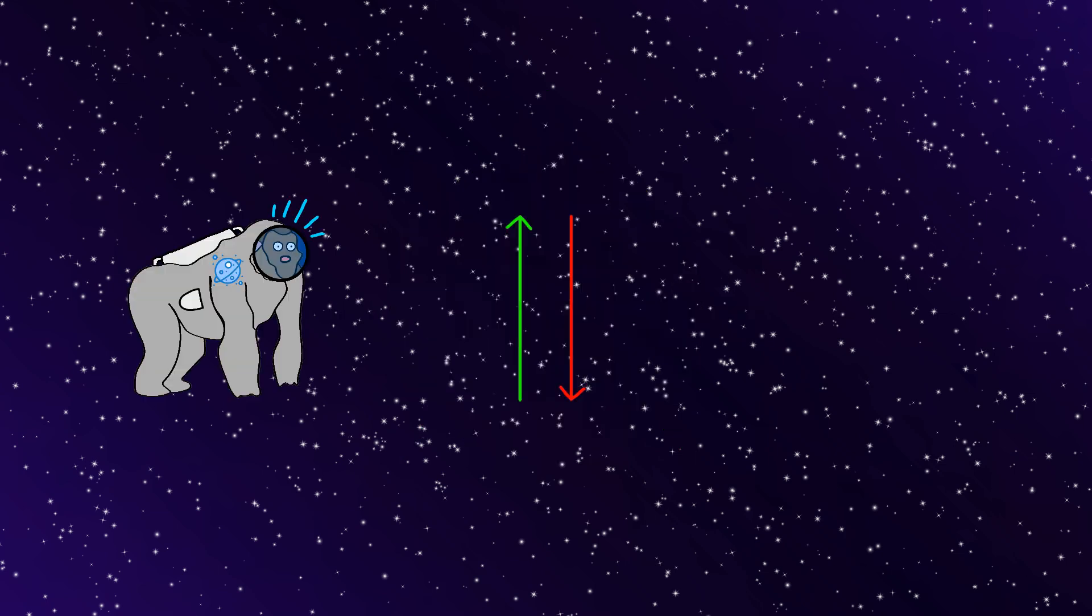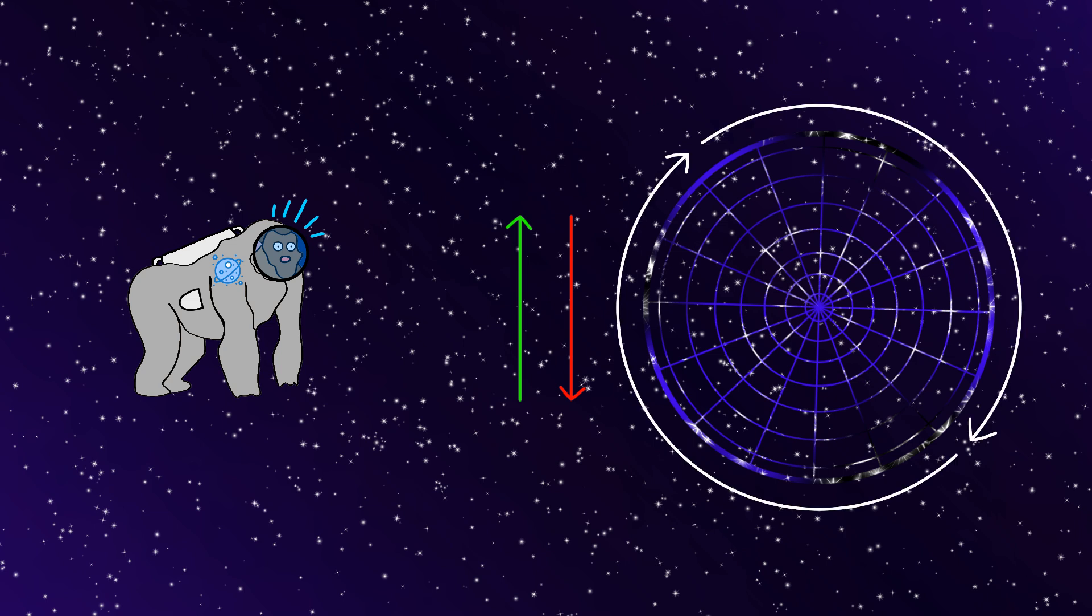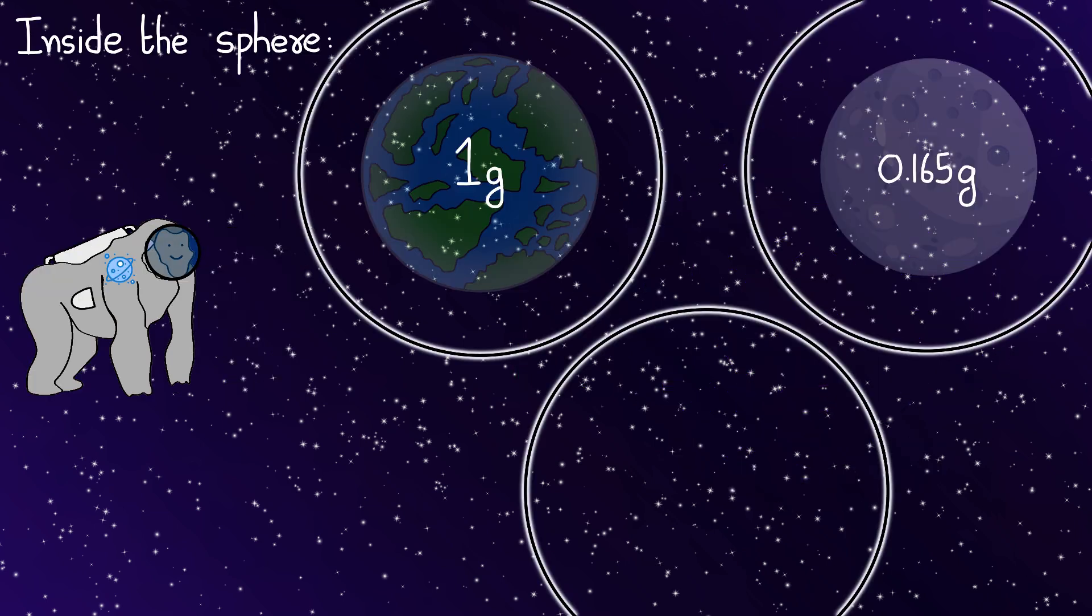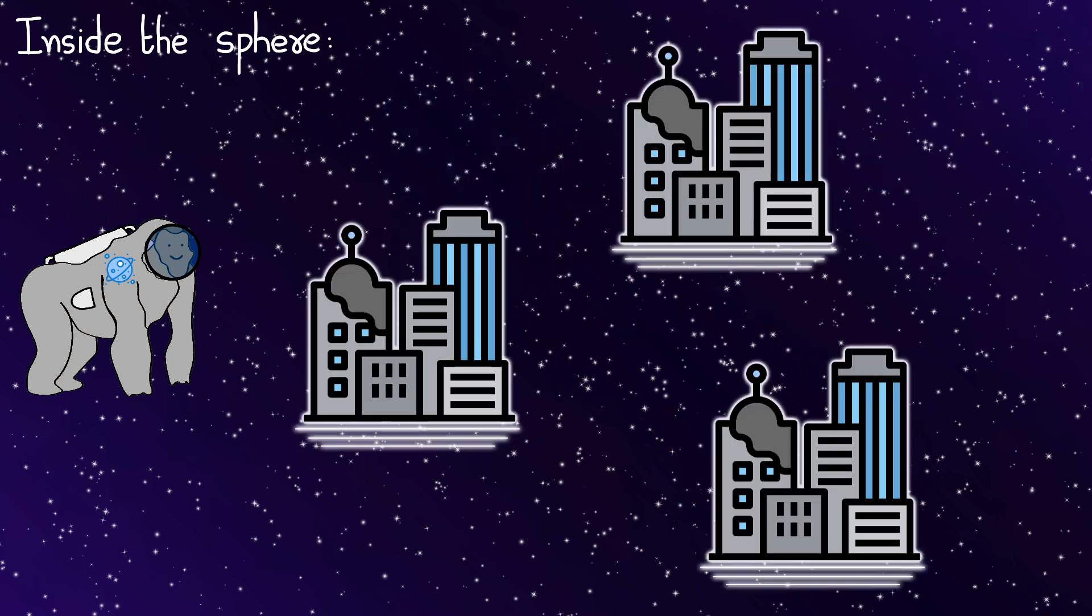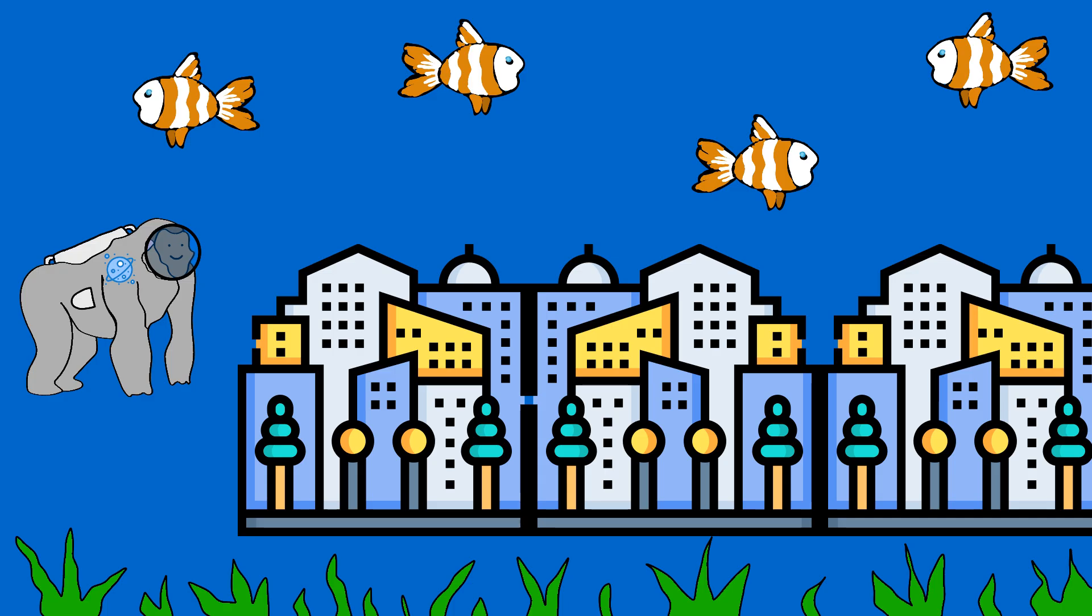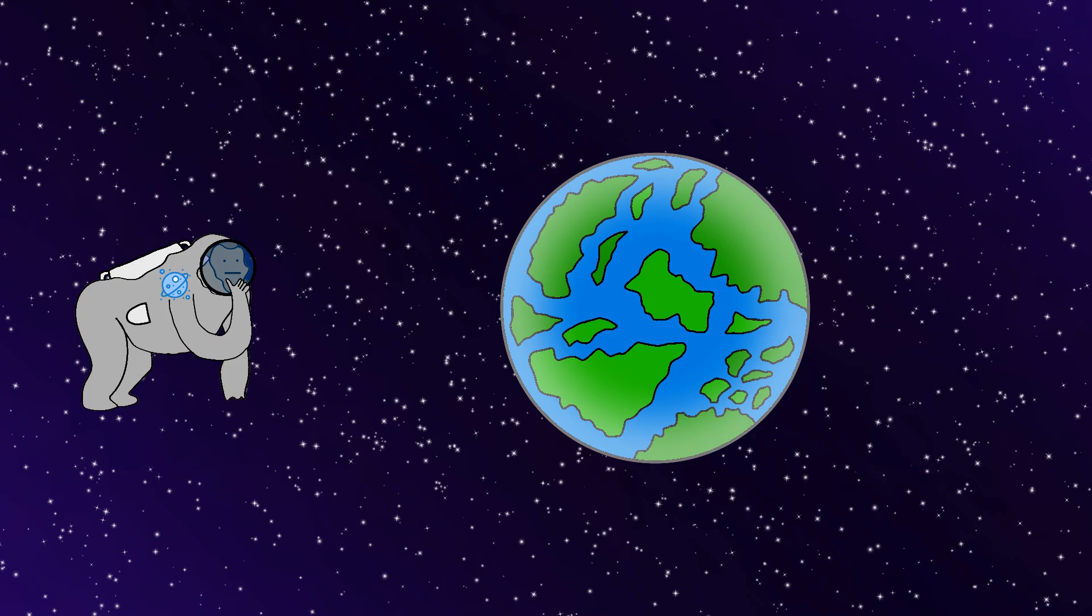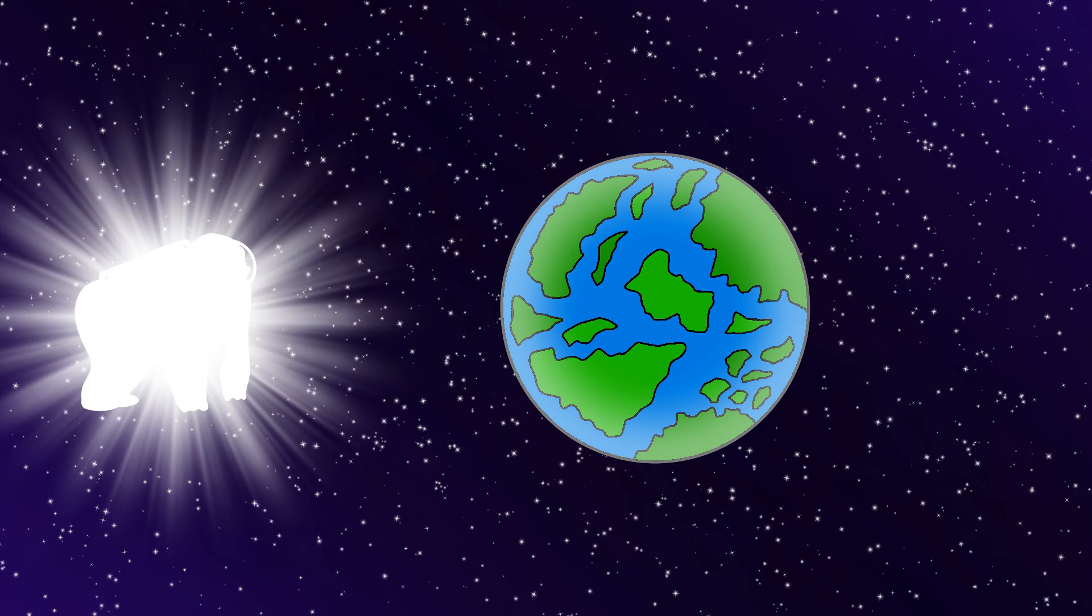Then Monkey realizes Monkey can control gravity inside the sphere by spinning different sections. And Monkey creates zones with earth gravity, moon gravity, and zero gravity. And Monkey's building floating cities, and underwater metropolises, and mountain ranges that stretch toward the center. And Monkey's thinking, Monkey is basically playing God with an entire world.